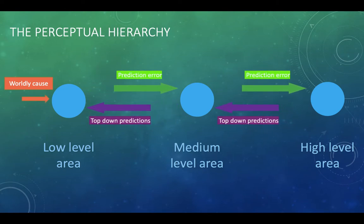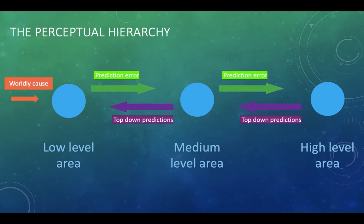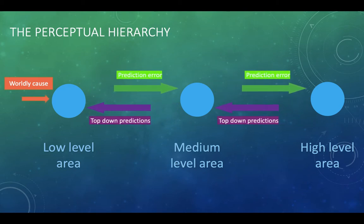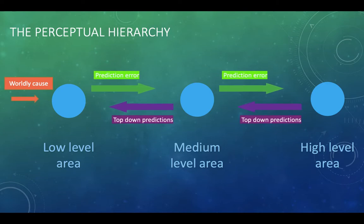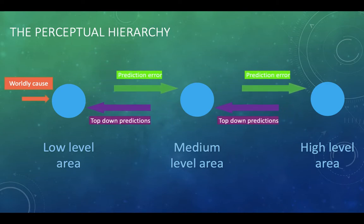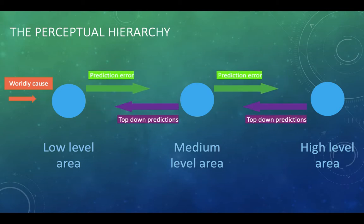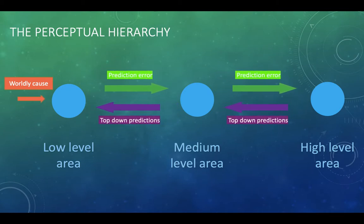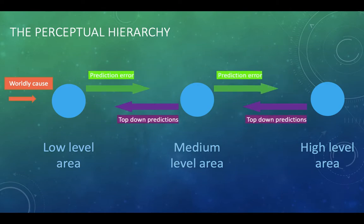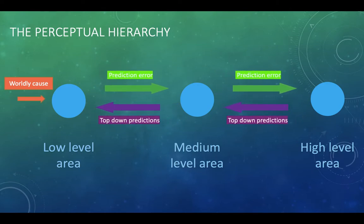So something to note here is that the fact there's a hierarchy means that at each level, it only needs to predict the input from the level below. It doesn't have to predict the highest area doesn't have to predict the input from the lowest area directly. It's this layered approach.